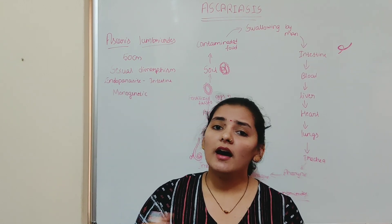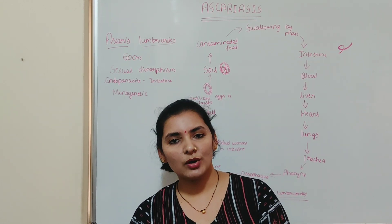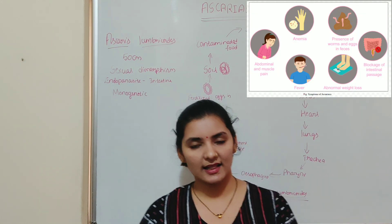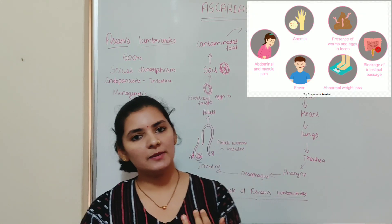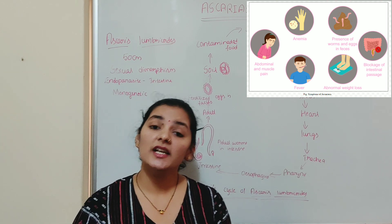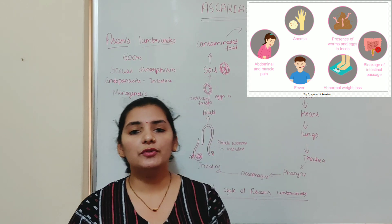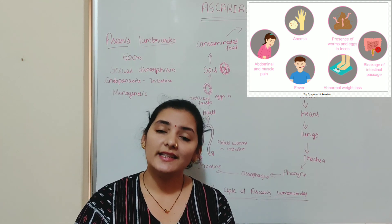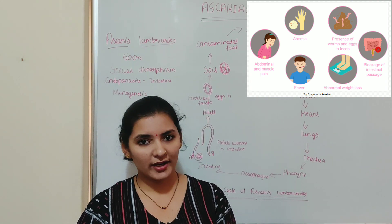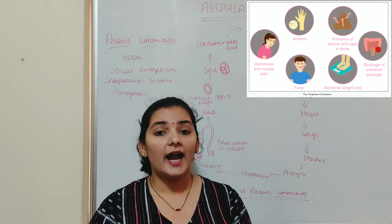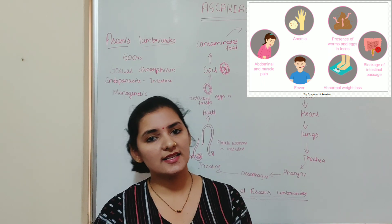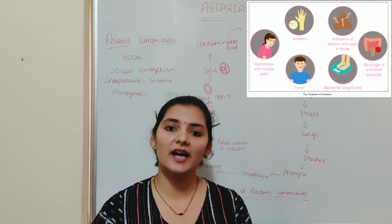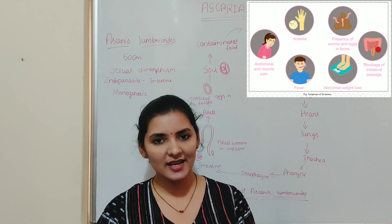When there is a large number of adult worms present in the intestine, the symptoms of Ascariasis include abdominal discomfort, cramps, abdominal swelling, fever, diarrhea, nausea, internal bleeding, and intestinal blockage. These symptoms appear only when a large number of adult worms are present in the intestine.